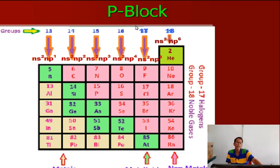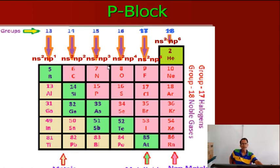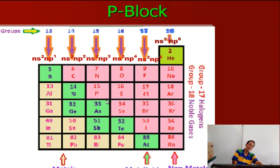P-block elements span groups 13 to 18 — these six groups are all called P-block elements. The last electron enters into the P sub-shell. Their general electronic configuration is: group 13 = nS², nP¹; group 14 = nS², nP²; group 15 = nS², nP³, and so on up to group 18. The S sub-shell is full but the P sub-shell is incomplete (1 to 6 electrons).